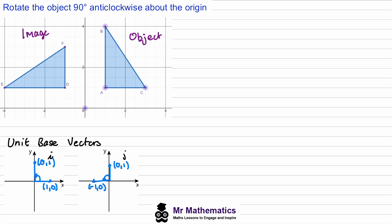It is these two transformed coordinates that create our transformation matrix — since we're rotating, we call it the rotation matrix. It involves our transformed i and j: transformed i has coordinates x = 0, y = 1, and transformed j has x = -1, y = 0.